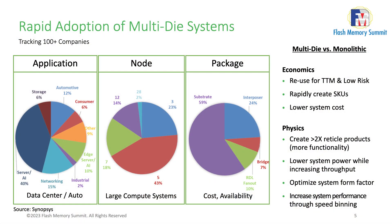Since most applications are still compute-dominated, the most relevant process nodes today are advanced nodes — 3nm and 5nm. But we also see a growing interest in larger geometries such as 7nm, 12nm, and even planar nodes, to support IO dies, specialty dies, and lower-cost applications. On packaging, most uses we see are organic substrates and laminates, due to their lower cost, availability from multiple sources, and technology maturity. For the highest performance in terms of density, you need interposers or advanced packages, but those come with significant financial cost and complexity.